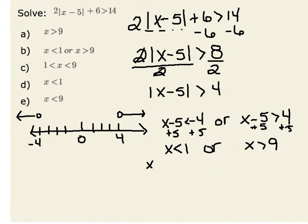For example, if I plug in x equal to 0 into my original inequality, I would have 2 times the absolute value of 0 minus 5 plus 6, and I want to check to see if that is indeed greater than 14. Well, let's see. 0 minus 5 is negative 5.